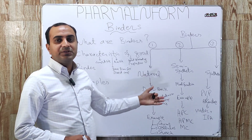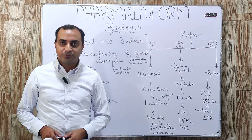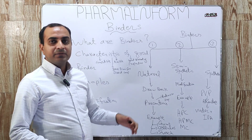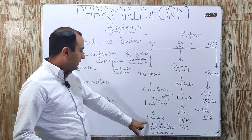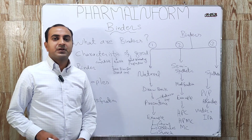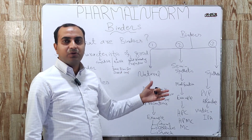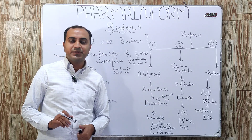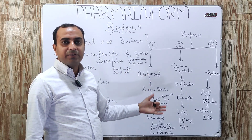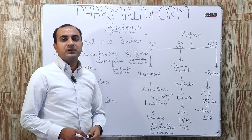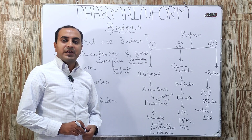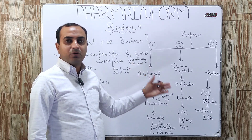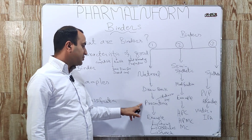Natural binders, as the name indicates, are obtained from natural sources. The main examples are gums, cellulose, and starch. However, natural binders have some limitations or drawbacks. The main drawback of natural binders is that they promote microbial growth. Whenever natural gums are used, they are a good source of microbial growth.